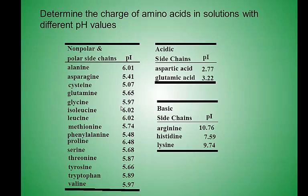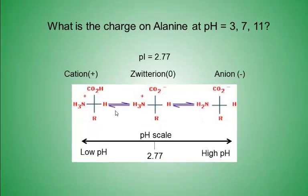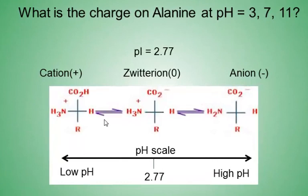Here is a brief list of amino acids and their associated pIs. I would like for you to determine the charge of an amino acid in solutions with different pH values. What is the charge on alanine at pH 3, 7, and 11? We must first know the pI. You will not be responsible to memorize any pI values. The pI for alanine is 2.77. At pH below 2.77, for example pH 2, alanine is a cation.